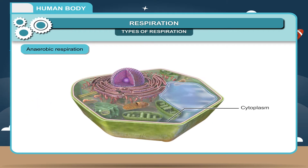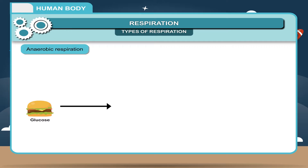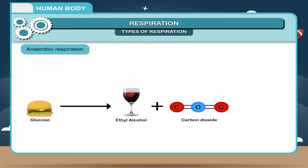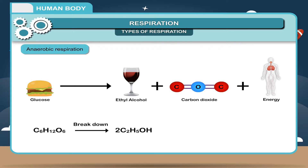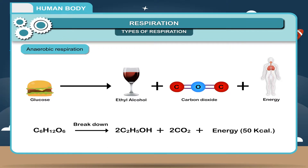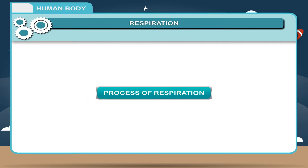It mostly occurs in the cytoplasm of the cells. The equation is: Glucose → Ethyl Alcohol + Carbon Dioxide + Energy. In chemical terms: C6H12O6 → 2C2H5OH + 2CO2 + Energy (50 KCal).